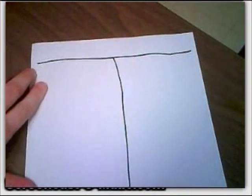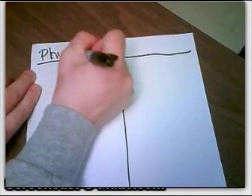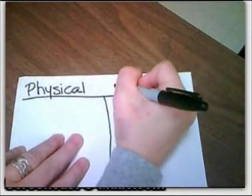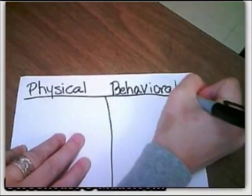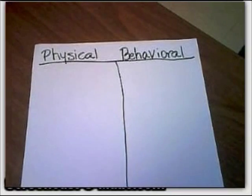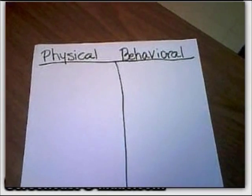Remember, you can pause us at any time. On one side of our T-chart we're going to have 'physical' for physical adaptations, and on the other side we're going to have 'behavioral.' When I see the word physical, I think about maybe our bodies, the way we're made. And when I think about behavioral, I think about our behavior and the things that we do.